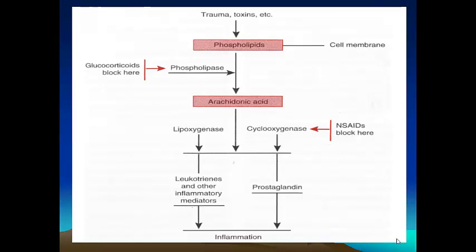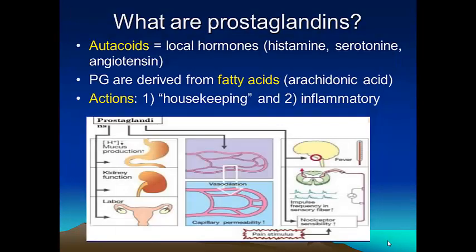Now let's say a few things about prostaglandins, which as we said are the target molecules that will not be produced when we give non-steroidal anti-inflammatory drugs. They're called autocoids, or local hormones — hormones produced locally throughout the body whose target cells are usually in the vicinity of the site where they are secreted. Importantly, prostaglandins apart from having an inflammatory role initiating the cascade of pain, fever, swelling, and heat, also have an essential physiological role.